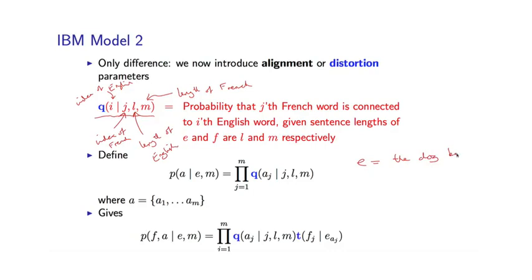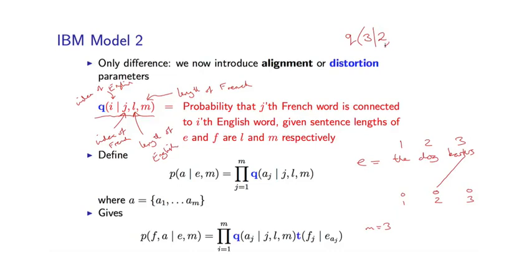The dog barks. Say we have M equal to 3 — we have three French words, numbered 1, 2, and 3. The second French word, say we align it to the third English word. The probability of this is Q of English position 3, conditioned on French position 2, and the lengths of the two sentences — L and M are both equal to 3 in this case.